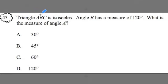It says, triangle ABC is isosceles. Angle B has a measure of 120 degrees. What is the measure of angle A?